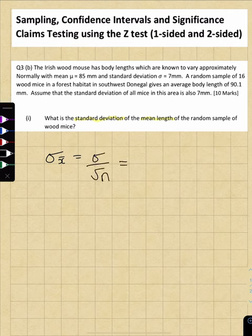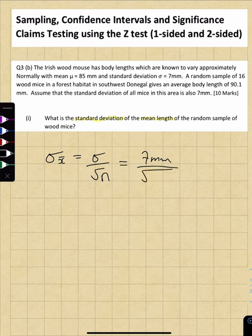root n. Sigma is supplied in the question as seven millimeters, divided by the square root of the sample size. The sample size there is 16.